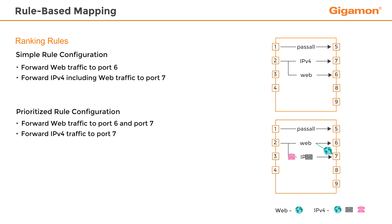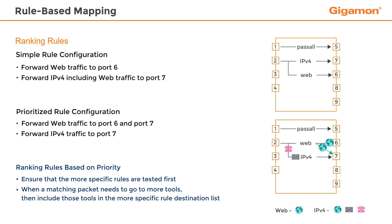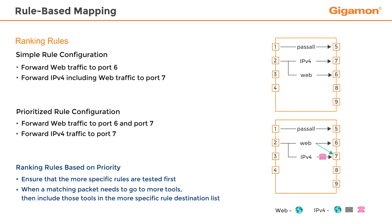To accommodate the overlap between web traffic and IPv4 traffic, the web rule can be made more specific by adding port 7 to the destination list. By doing so, the original packet delivery goal is met. When ranking rules based on priority, ensure that the more specific rules are tested first. Also, when a matching packet needs to go to more tools, then include those tools in the more specific rule destination list.